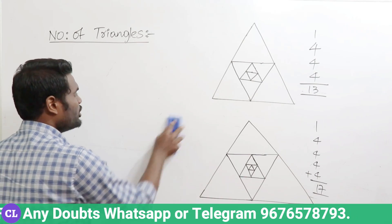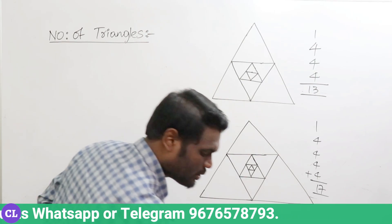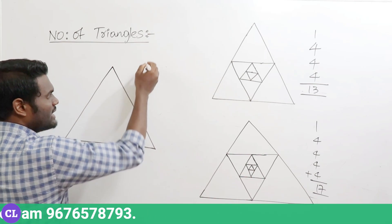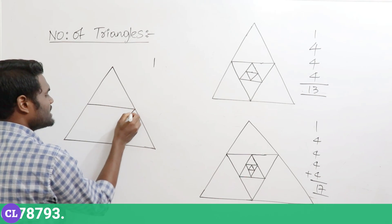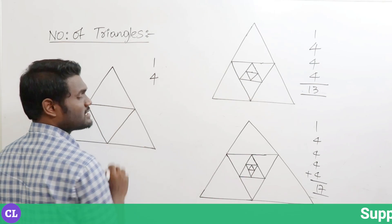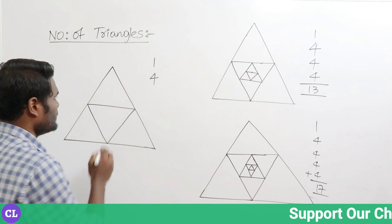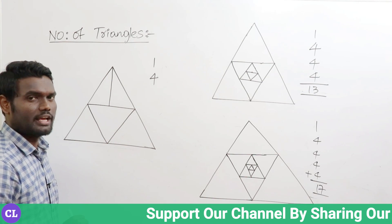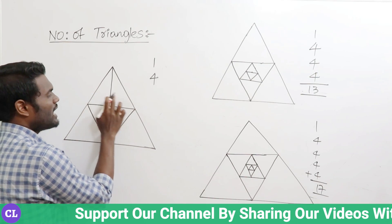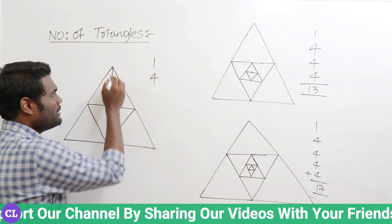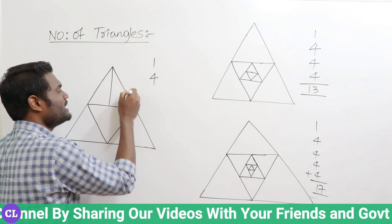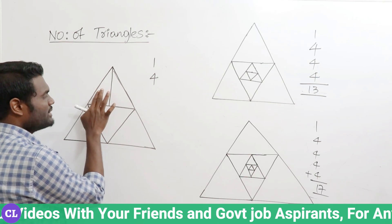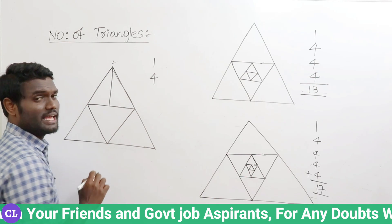Let us look at one more important variation. In this figure, one big triangle equals one; with one inserted it becomes four. Now this is the important point: if I draw a line extending outward, how many extra triangles do you get? You get two extra triangles — one and two. You are not supposed to say one plus two equals three, because this triangle is already counted in the four. That is why I am counting only the extra triangles, which are two.